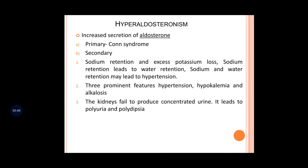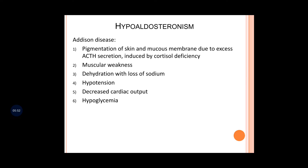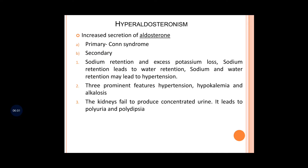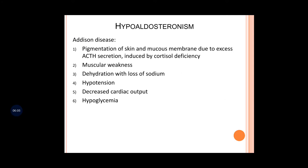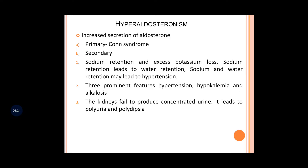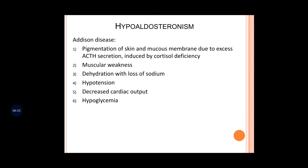There is also hypoaldosteronism, known as Addison's disease. In Addison's disease, there is pigmentation of the skin and mucous membranes due to excess ACTH secretion, muscular weakness, hypertension, decreased cardiac output, and the patient may suffer from hypoglycemia. It is important not to confuse Conn's syndrome (hyperaldosteronism) with Addison's disease (hypoaldosteronism).